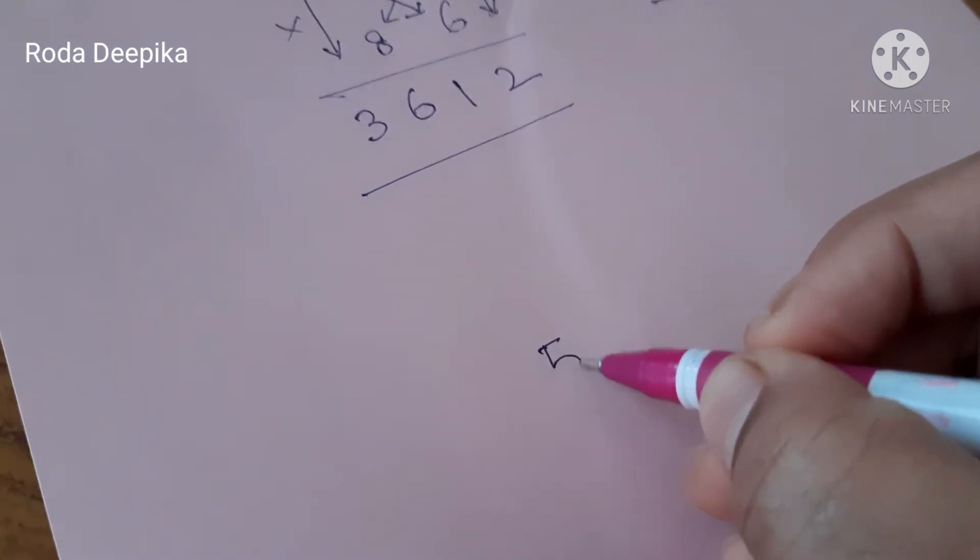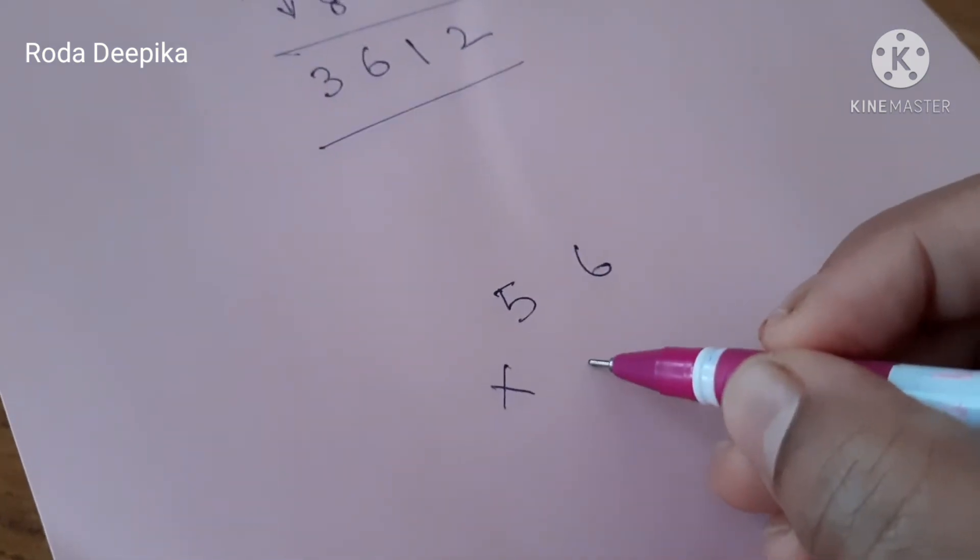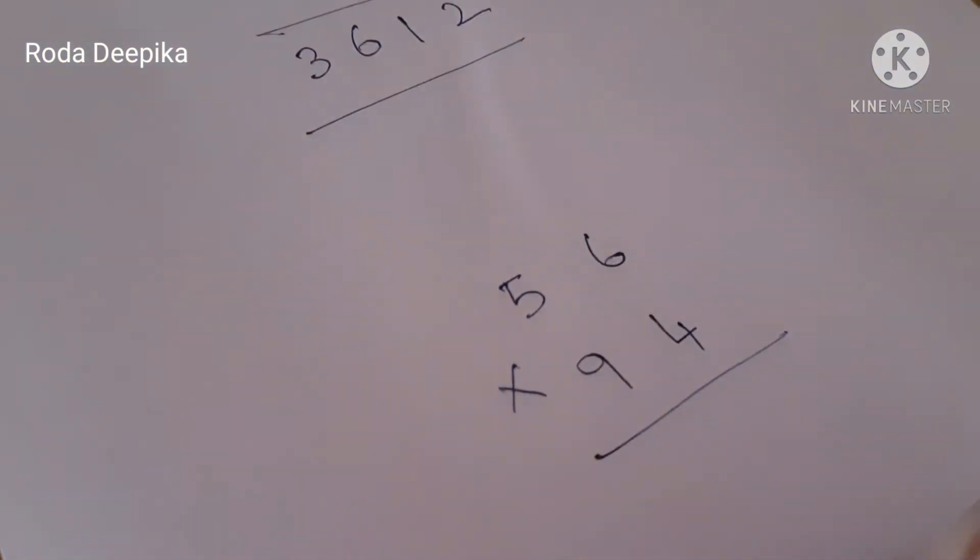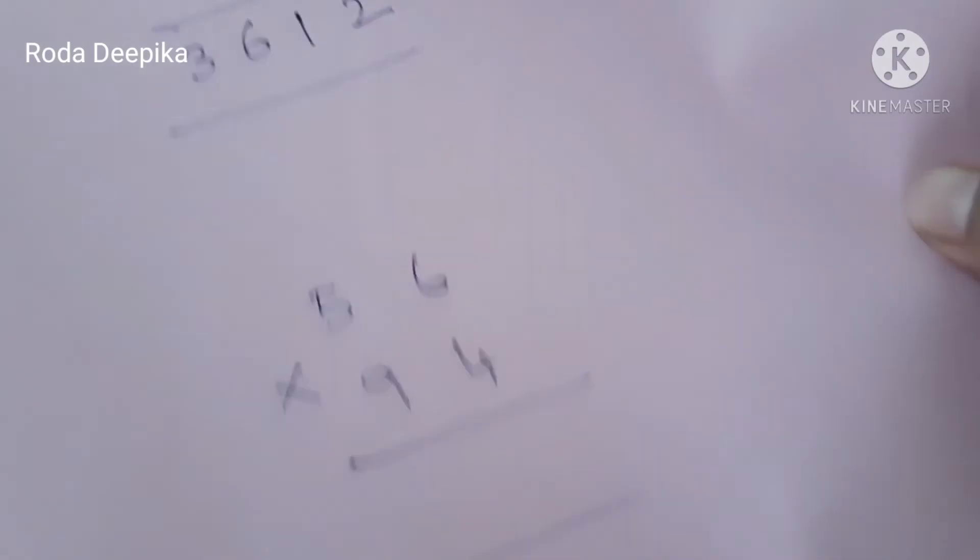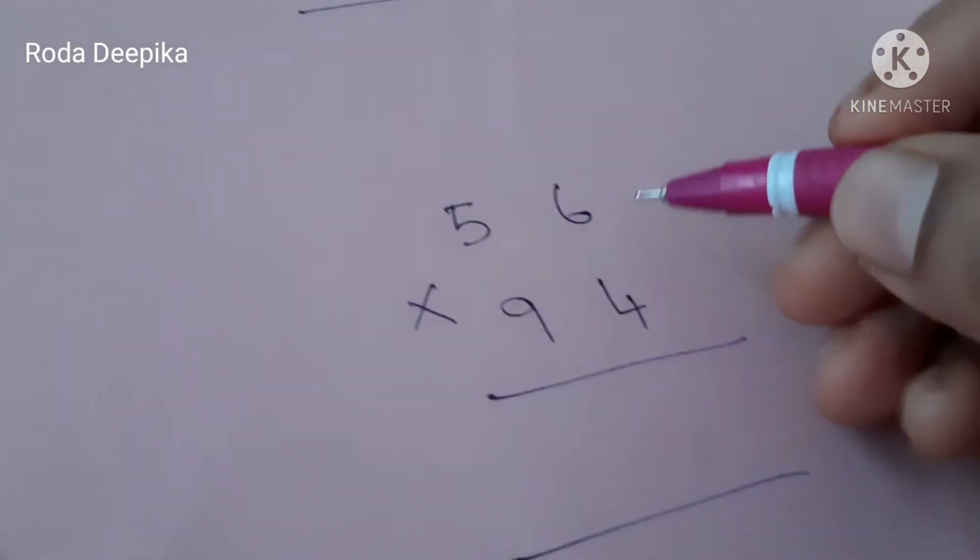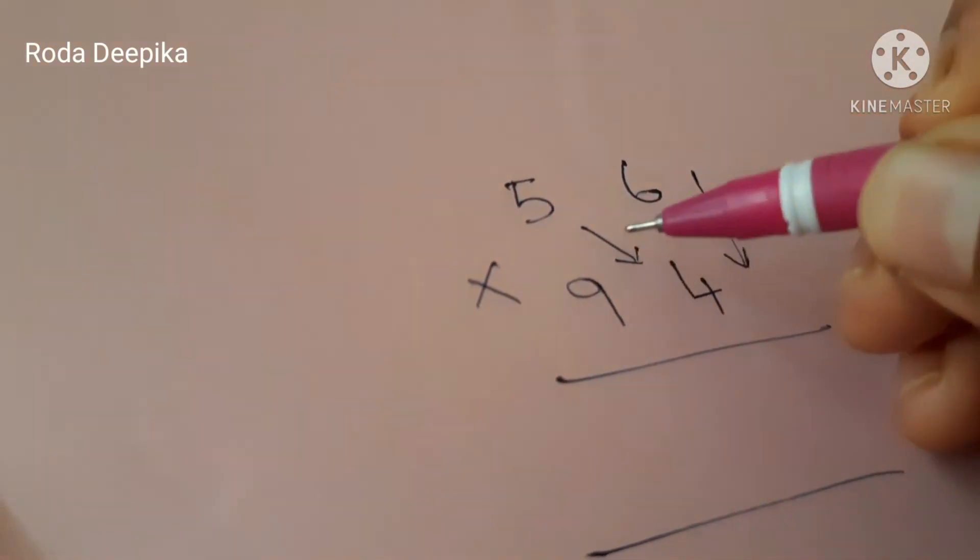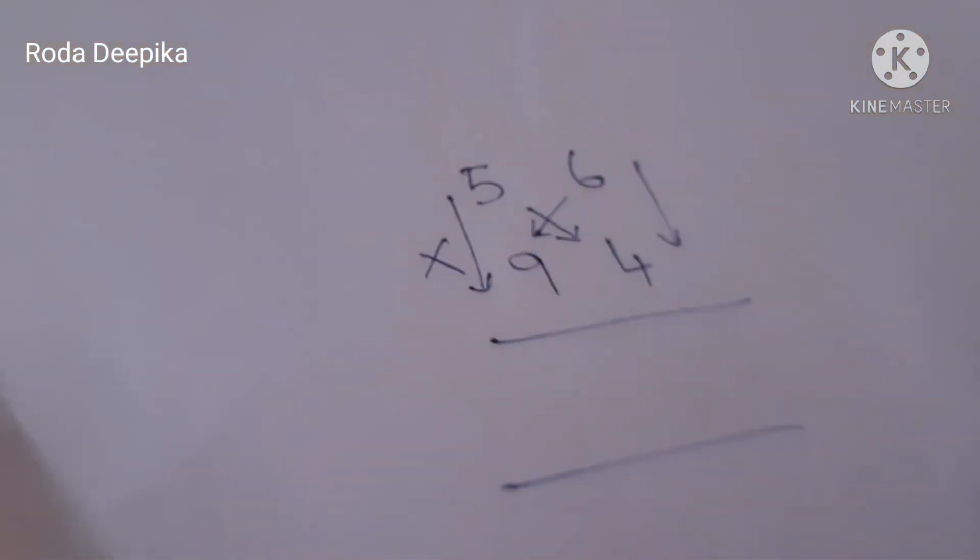Let me do another sum 56 into 94. For first 20 problems try to put arrow marks and then solve. After you have practiced then you can avoid putting arrow marks.